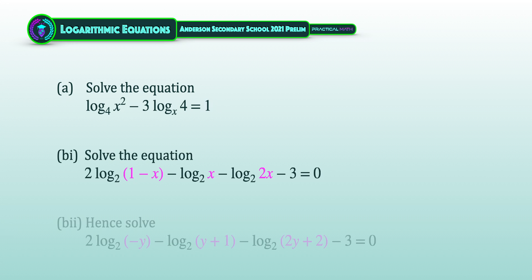Lastly, using the results from the previous part, solve a similar logarithmic equation of 2 times log (negative y) to the base of 2, minus log (y plus 1) to the base of 2, subtract log (2y plus 2) to the base of 2, minus 3, equal to 0.